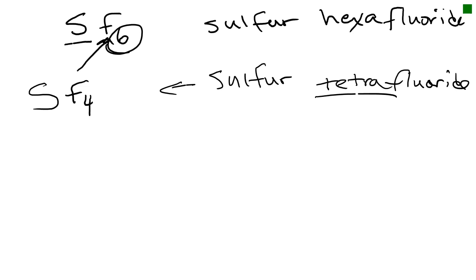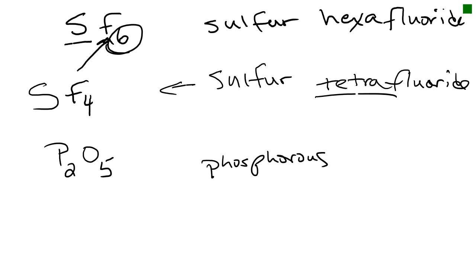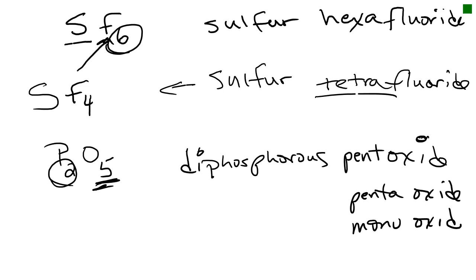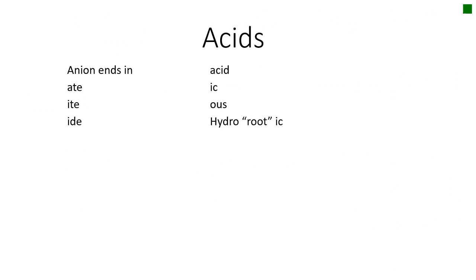If we have P2O5: first is phosphorus, the second element is oxide. There are two phosphorus atoms, so this is diphosphorus, and five oxygens, so penta — giving us diphosphorus pentoxide. Note: if you have a double vowel, like penta-oxide or mono-oxide, you drop that first vowel, so it's pentoxide rather than penta-oxide. That covers molecules.